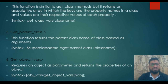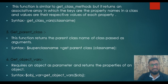The next function is get_class_vars. This function is similar to get_class_methods, but it returns an associative array in which the keys are the property names in a class and the values are the respective values of each property. The syntax is: get_class_vars('class_name').